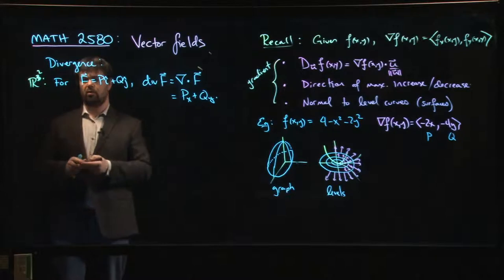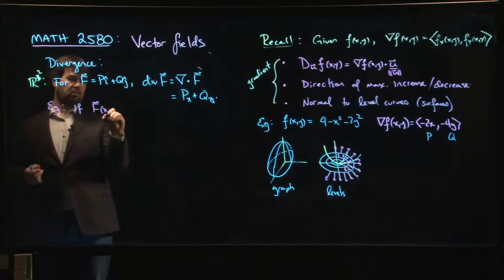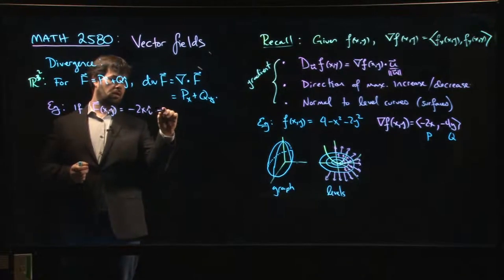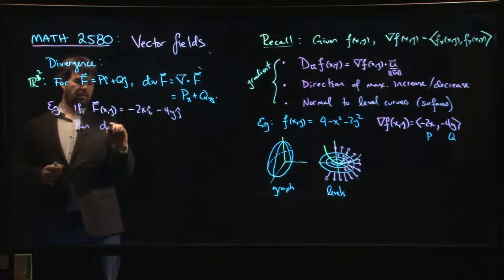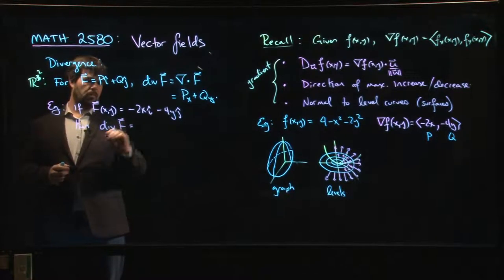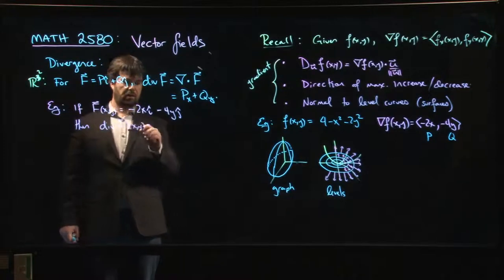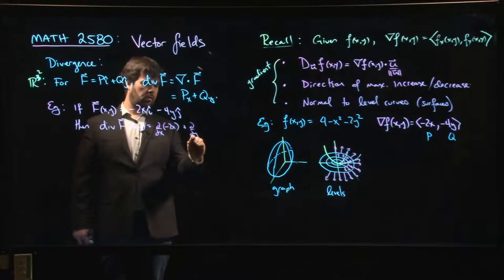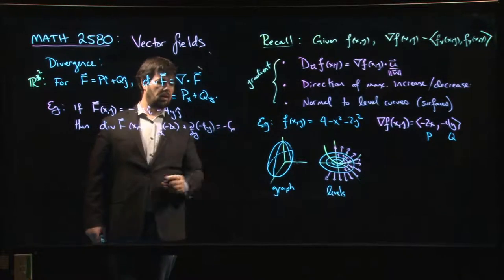So let's do that as an example. If my vector field f as a function of x and y is minus 2x i minus 4y j, then the divergence of f, as a function of x and y, is going to be the x derivative of minus 2x plus the y derivative of minus 4y. That's easy enough. Minus 2 minus 4, I get minus 6.